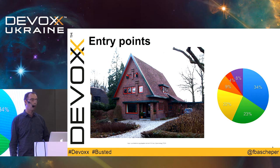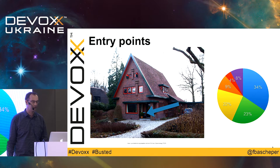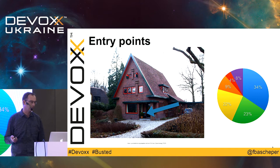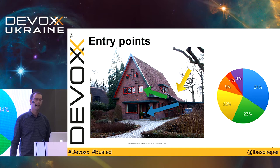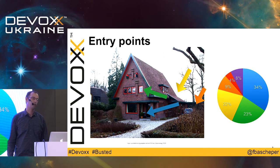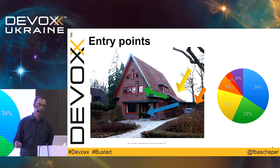Wondering where burglars actually enter your home — because that's useful to know before you try to prevent it. The most usual place is the front door: 34% of burglars just enter straight through your front door. The second most popular place is a first-floor window, most likely the one above the garage. The third is through the back door, and the fourth is the garage itself, accounting for about 9%. So: 34% front door, 23% first-floor window, 22% back door, 9% through the garage, and only 4% are actually using unlocked entrances.